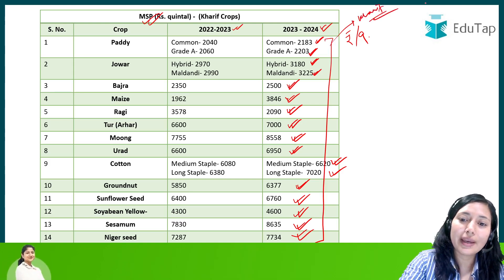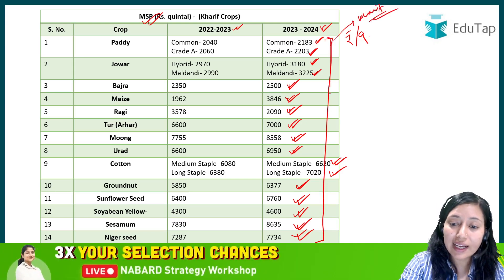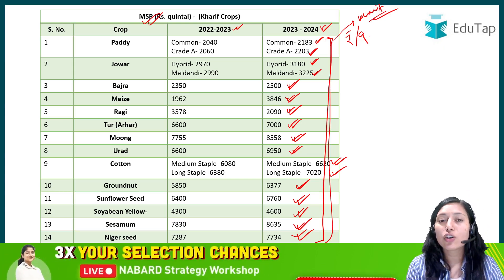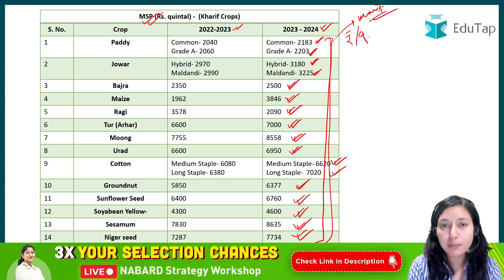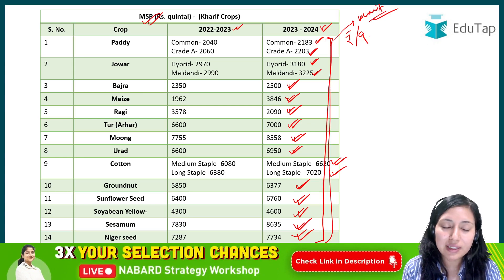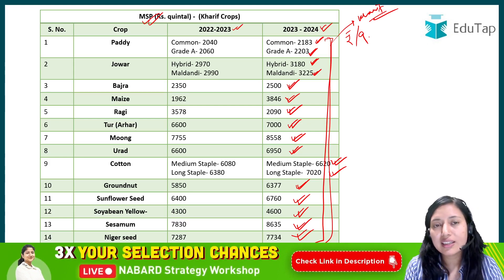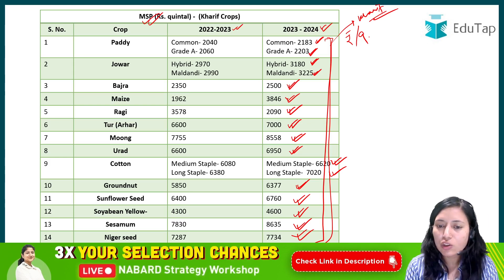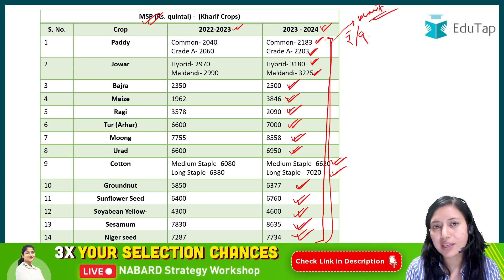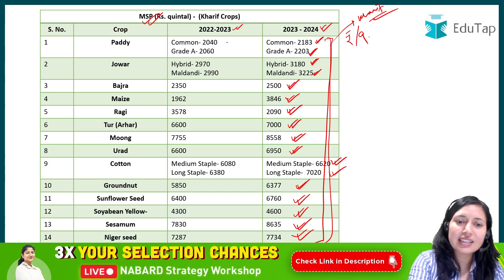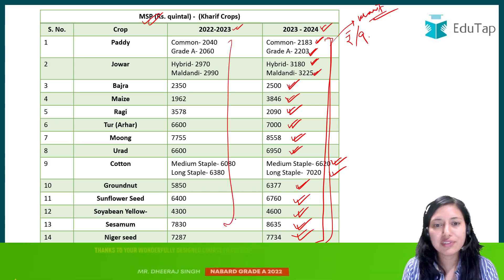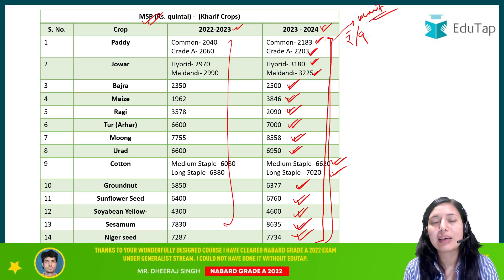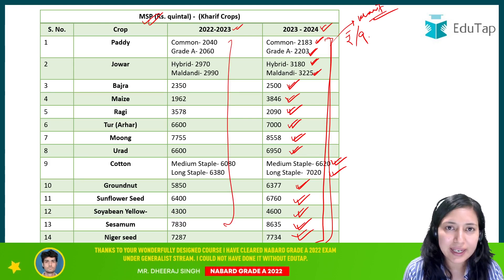So that covers the current MSP of Kharif season crops. All these MSP values are important because questions can be asked about any of them. Apart from important crops, exams can also ask about the MSP of other crops. So you should know the MSP of all crops. This list also shows the MSP for the previous year, so you can compare and see how much the MSP has increased.